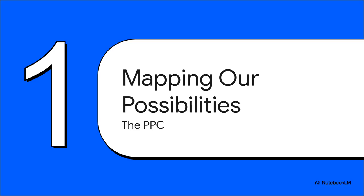Okay, so let's dive right in. To really get a handle on these choices, economists use this brilliant visual tool. We're going to map out all these possibilities on a graph called the Production Possibility Curve, or you'll often hear it called the PPC.